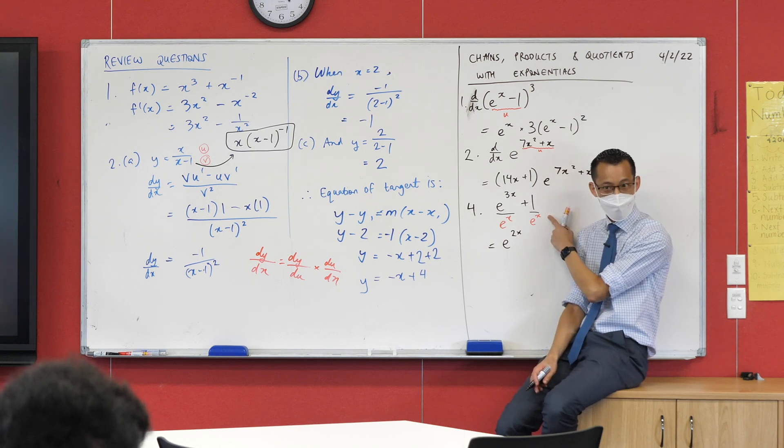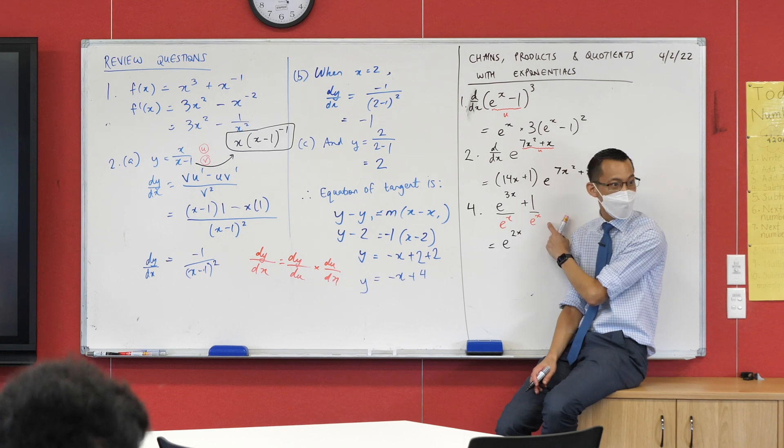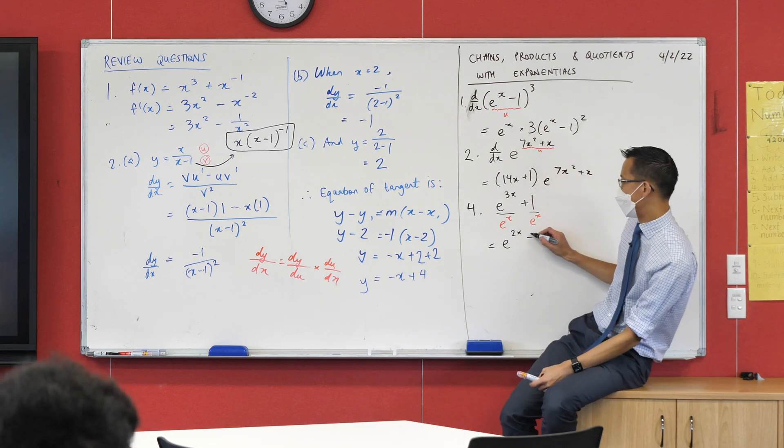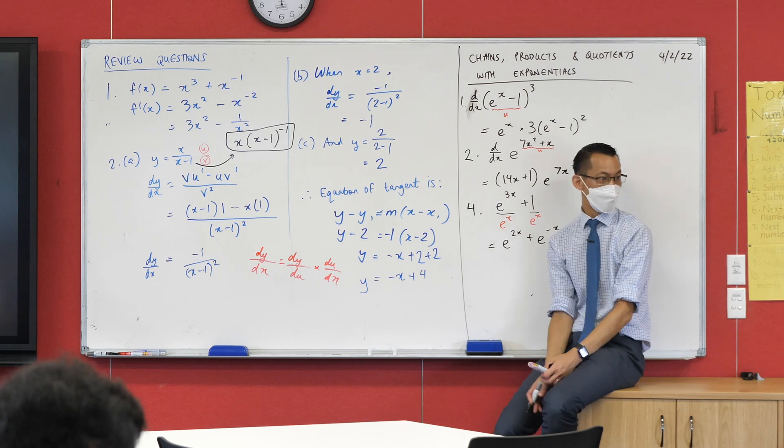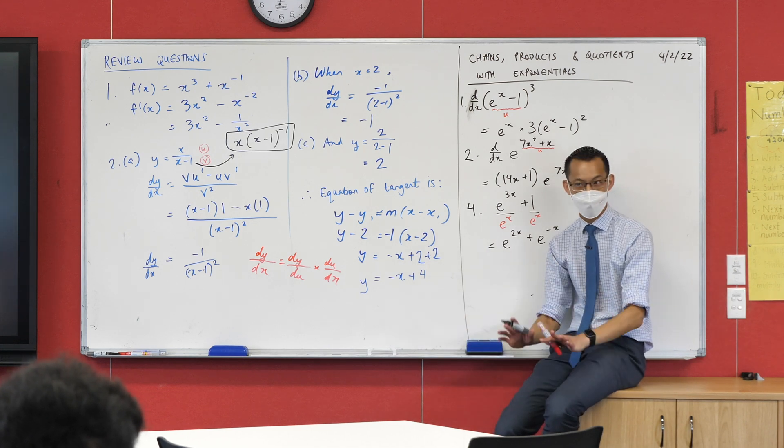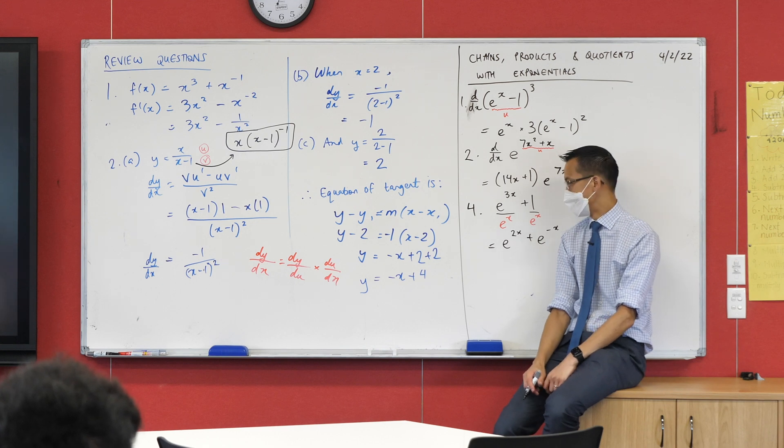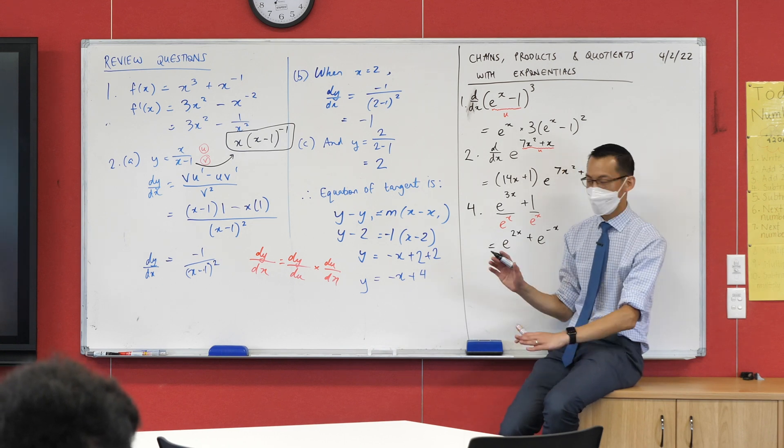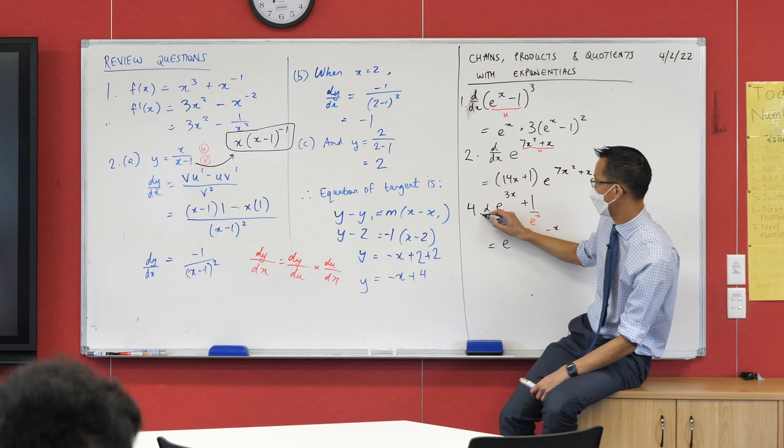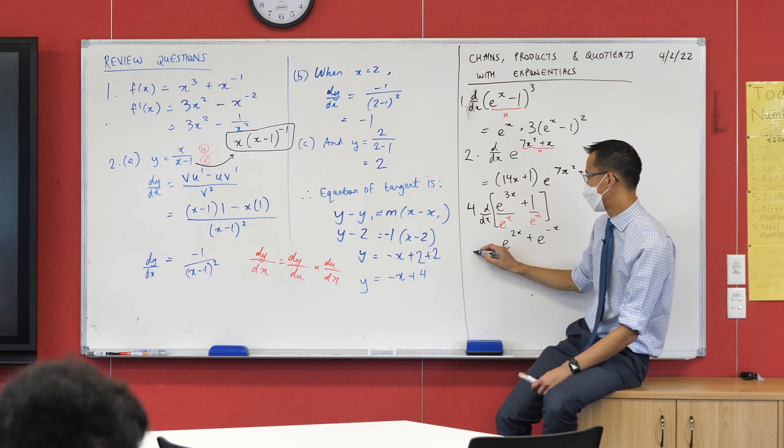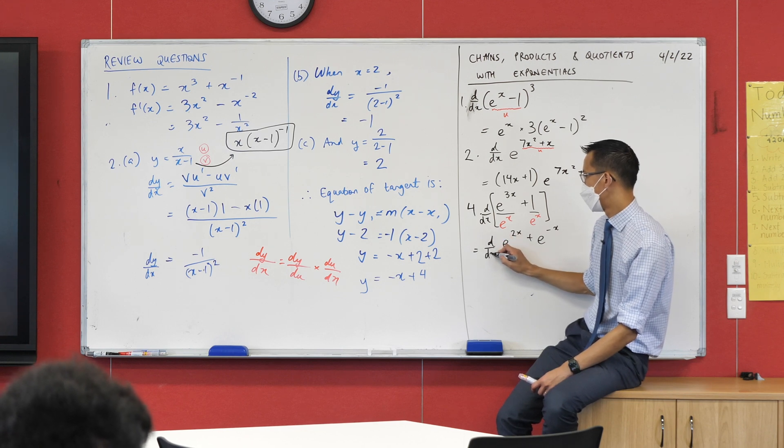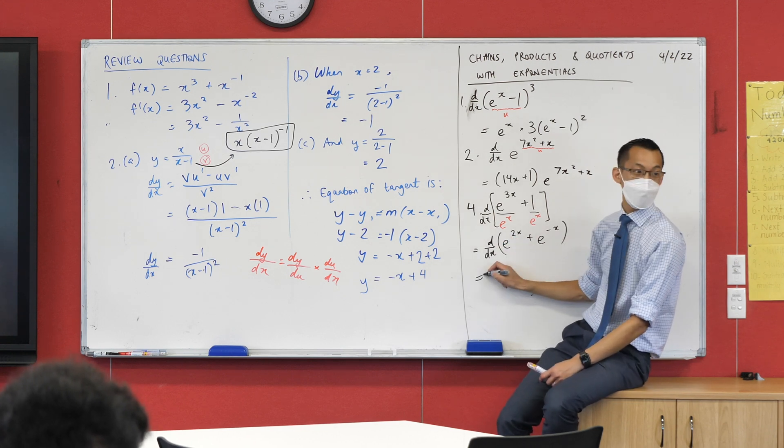This one here, one divided by e to the x—this is going to be a negative index, isn't it? So I would write that as e to the negative x. No quotients. I don't need to use the quotient rule at all, but I do need to differentiate now. All I did was reframe the question. So if the derivative of all of this is going to be the same as the derivative of all of this, and I'm going to go term by term now.